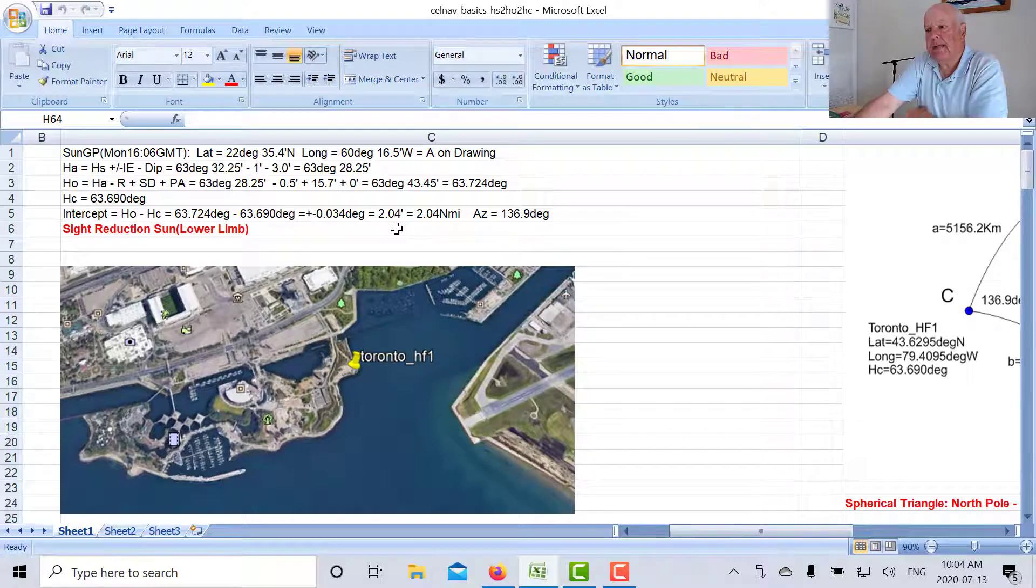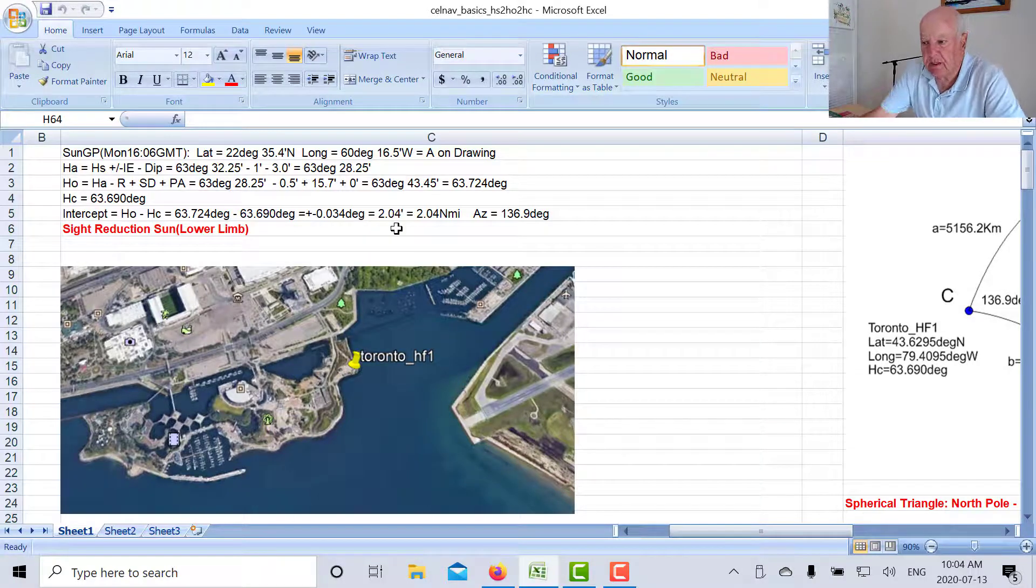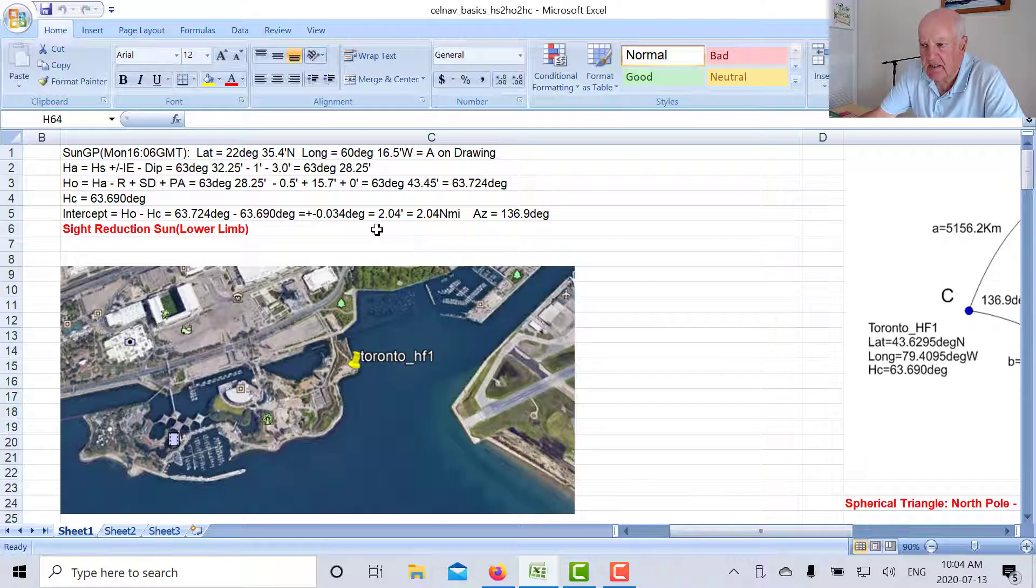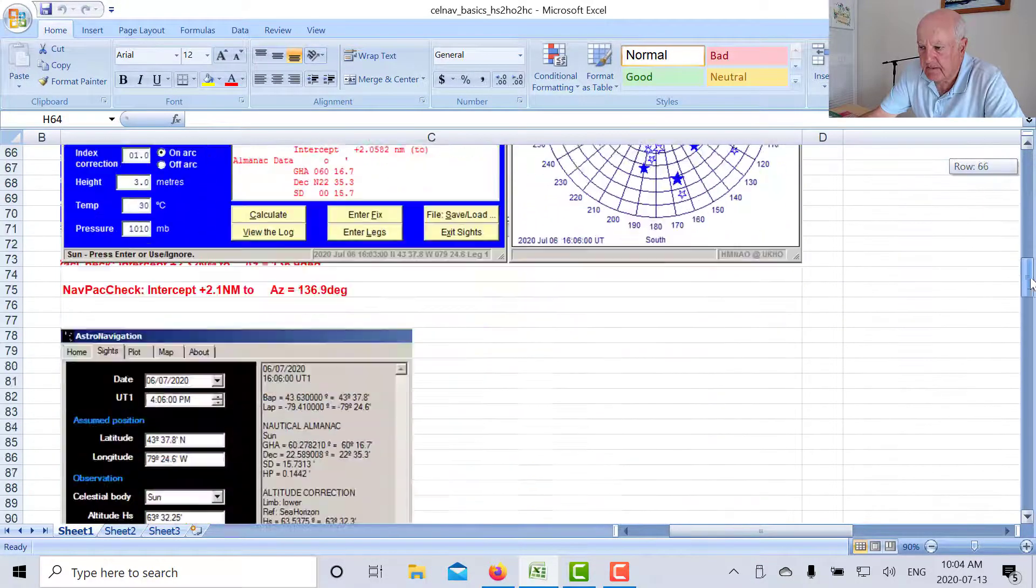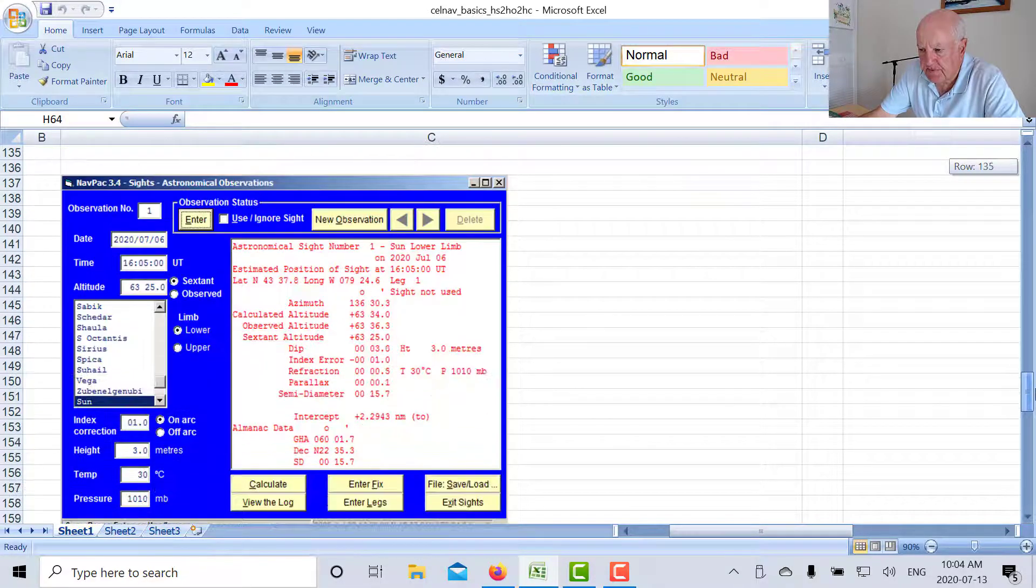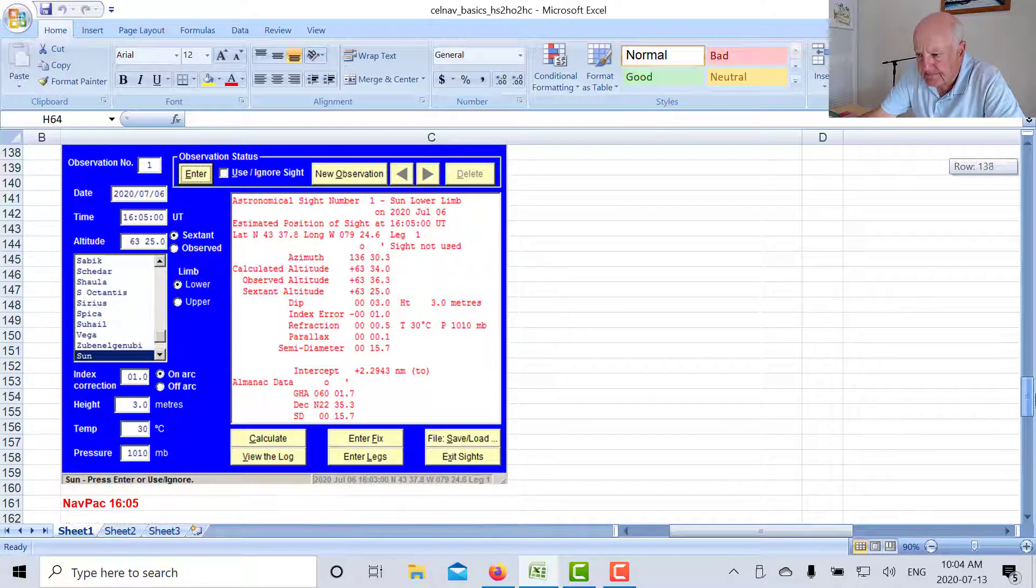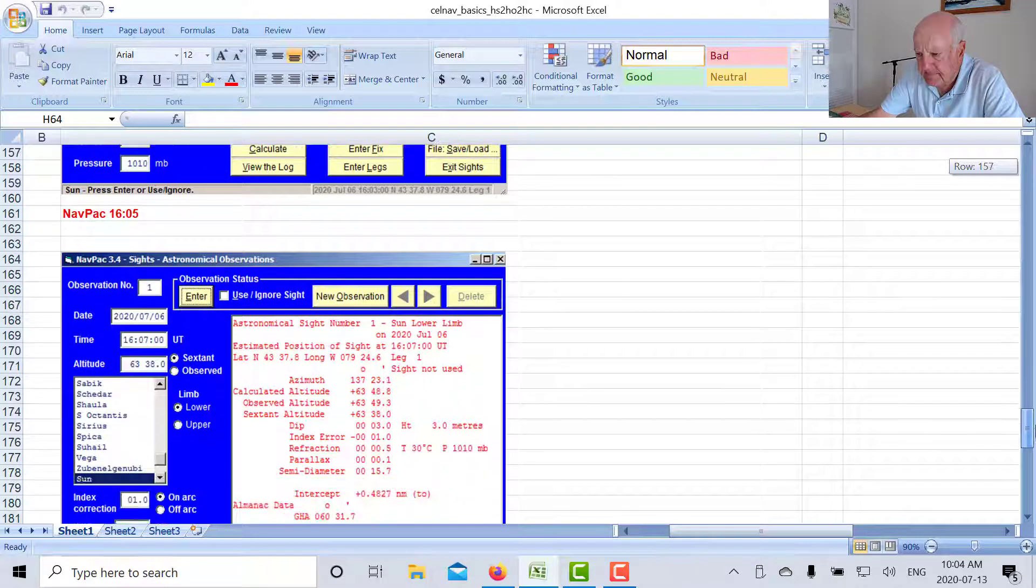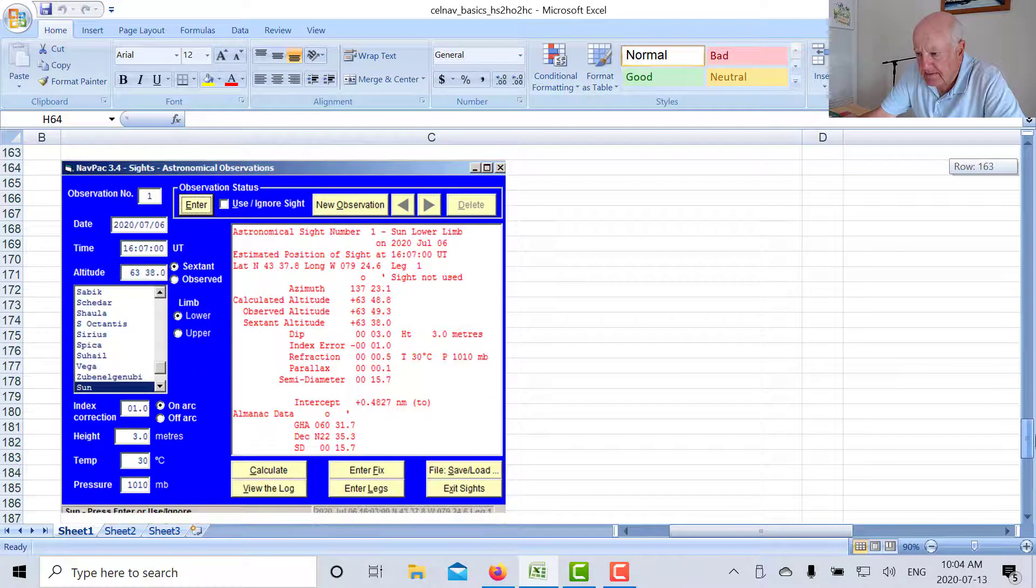Now what we did on Monday is we took an average reading and we took it close to when the sun was highest. So really an average probably was not such a good idea at that time because it's not a straight line.